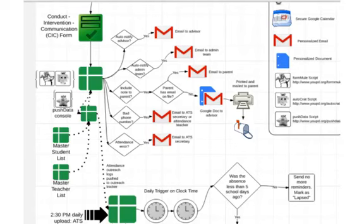Schools can get tremendous use out of Google Forms for creating custom systems like this one that allows for student incidents and home outreach to be logged in a way that auto-emails student advisors and allows for the school team to improve transparency and follow through after a student has been absent.